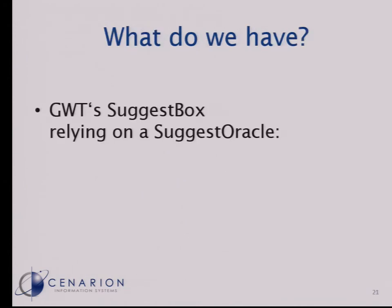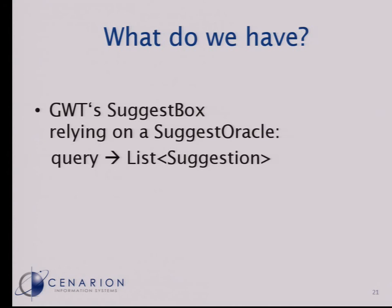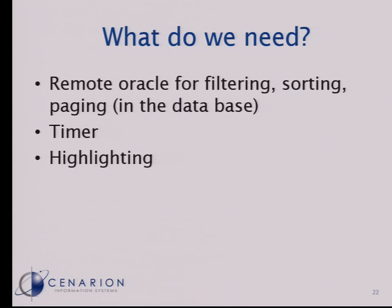What do we have? There is a suggest box already provided by GWT — it's a text component, but again it's only a client-side component. You can put in a lot of strings and it provides suggestions, but you don't want to put in 40,000 employees. So you have to write your own oracle — called a suggest oracle. This suggest oracle is given a query and then gives back a list of suggestions displayed in a drop-down box. What we needed to implement was a remote oracle that does filtering, sorting, and paging inside the database, quite similar to the paging table.